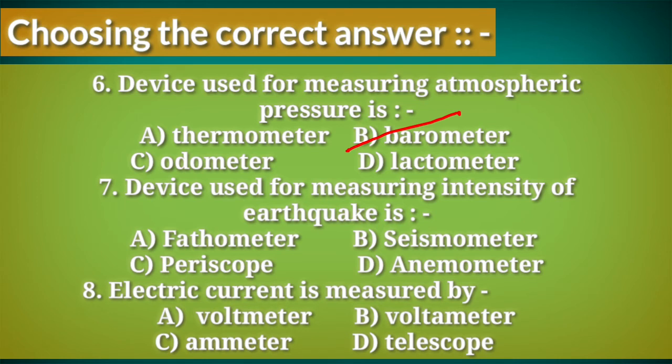Question 7: the device used for measuring the intensity of an earthquake is — A. Fathometer, B. Seismometer, C. Periscope, D. Anemometer.